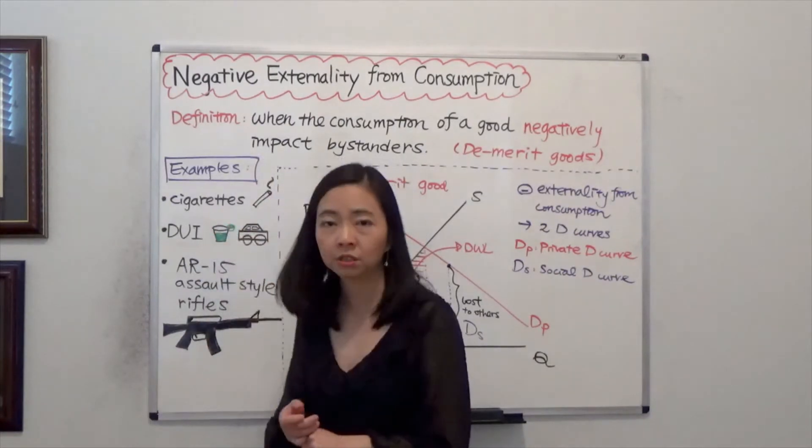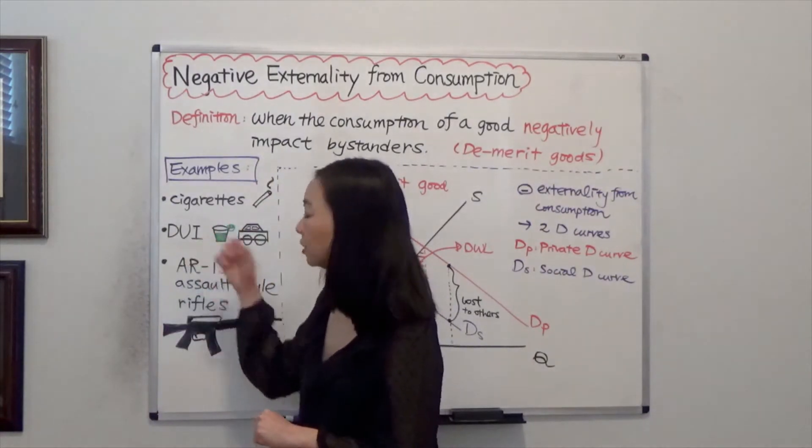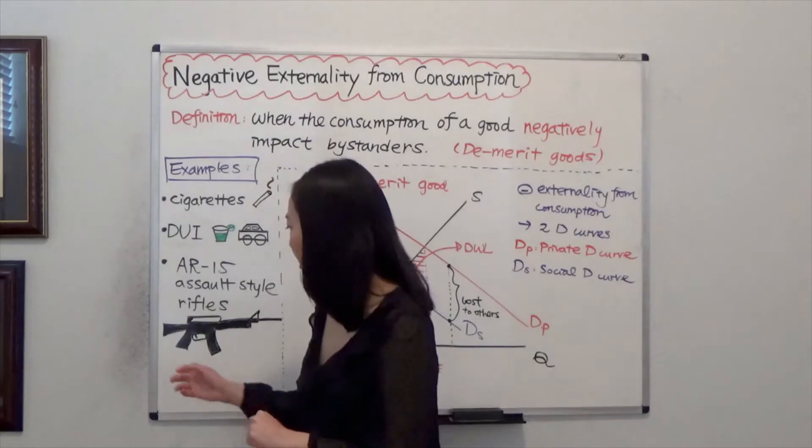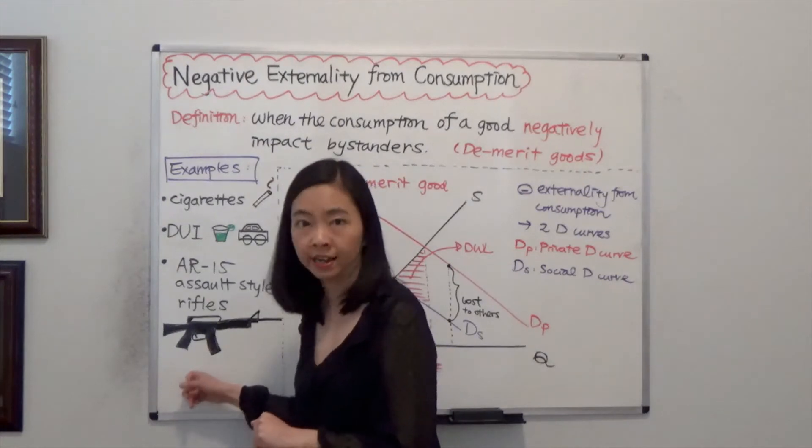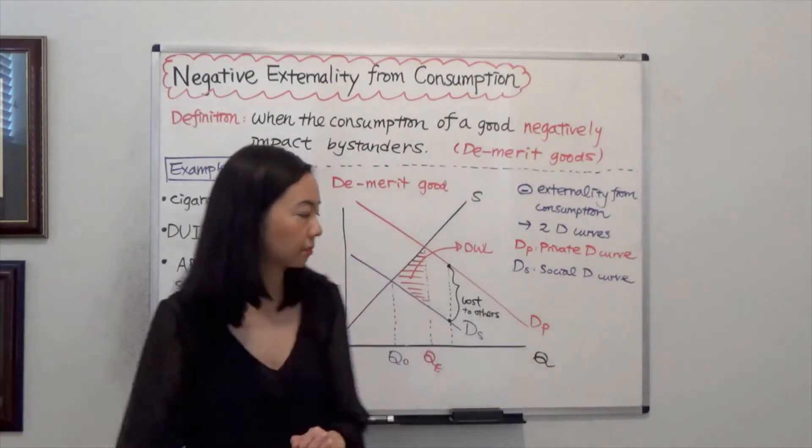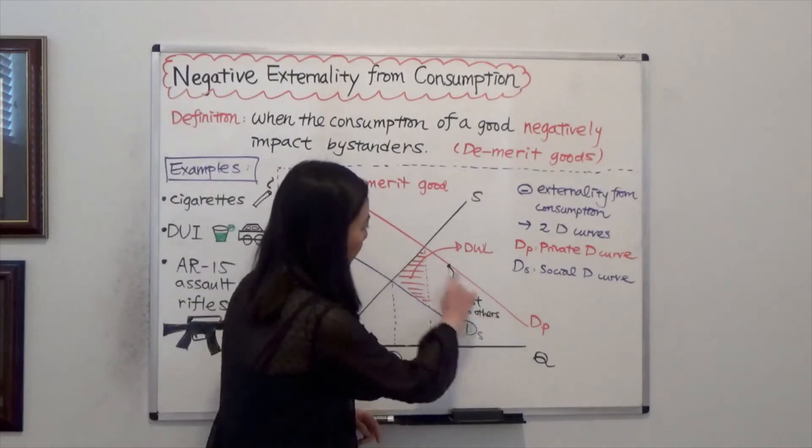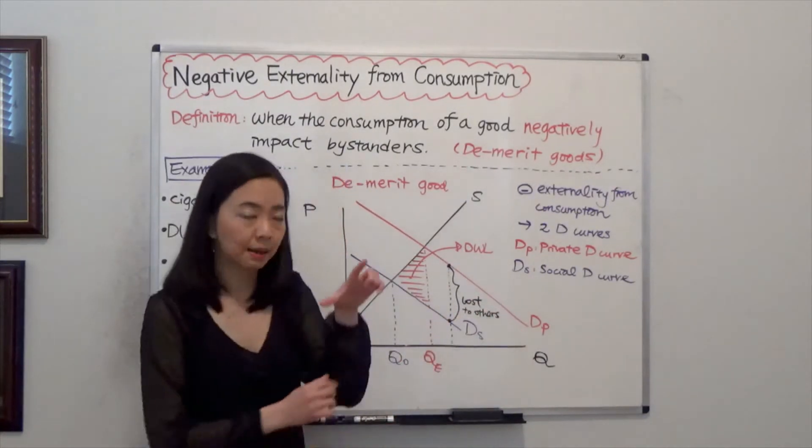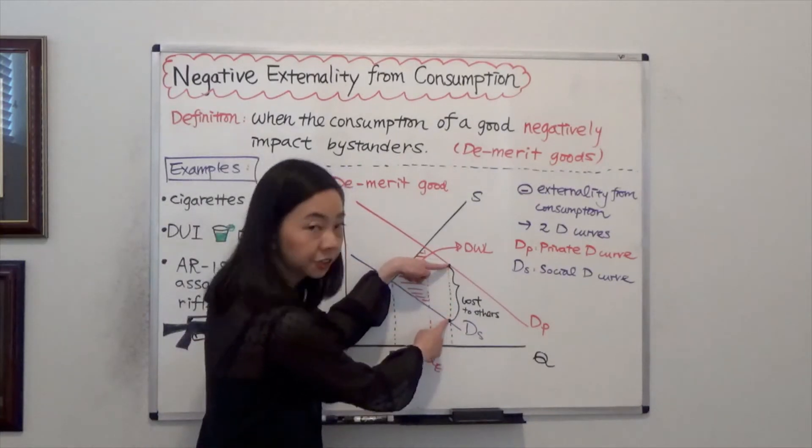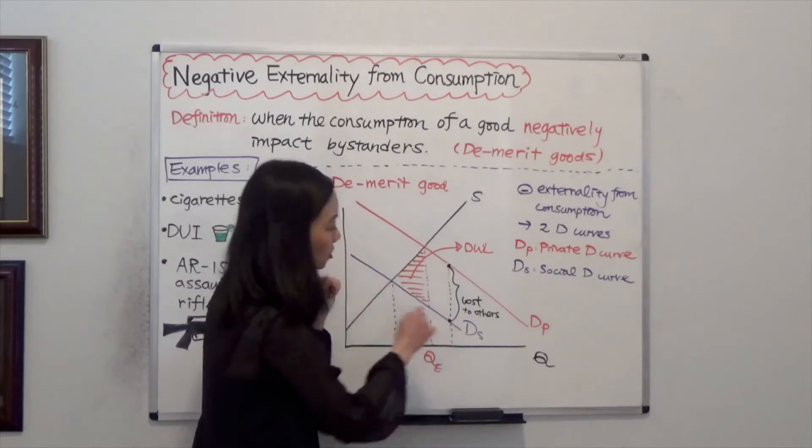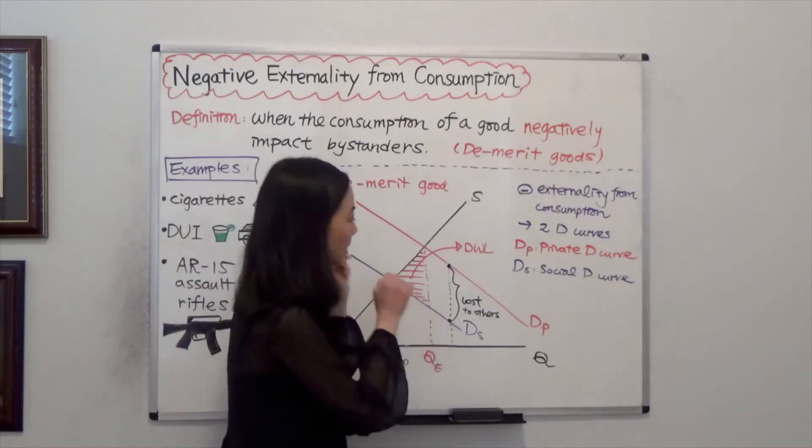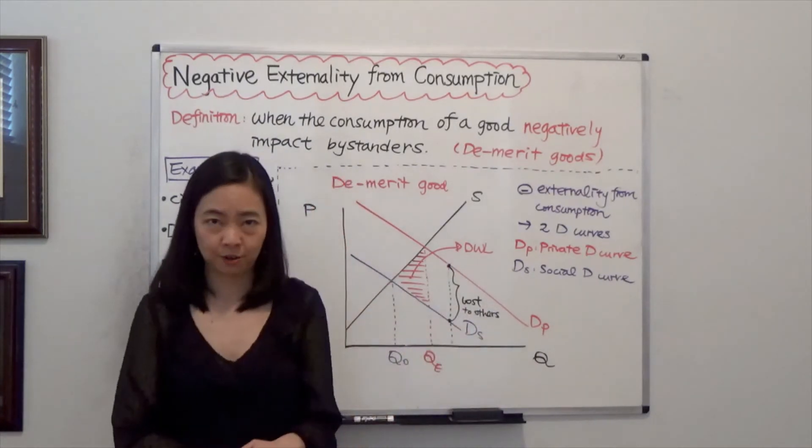This includes secondhand smoke, endangering lives under DUI, and going to Walmart to shop and dying there because of AR-15. So we can see that this is the private demand curve. Subtracting the cost to others, you get the social demand curve. So the social demand curve sits below the private demand curve.